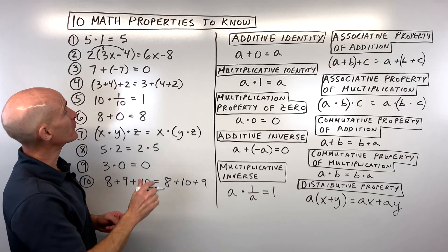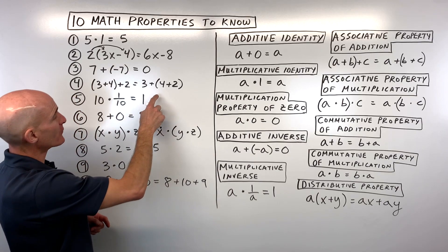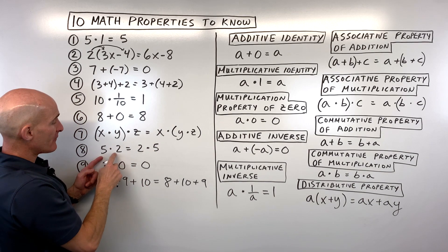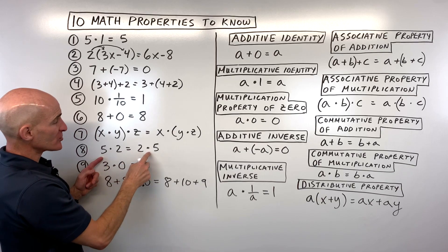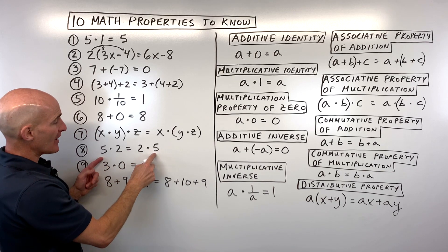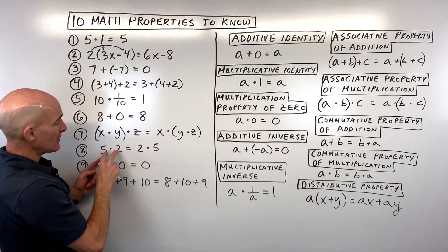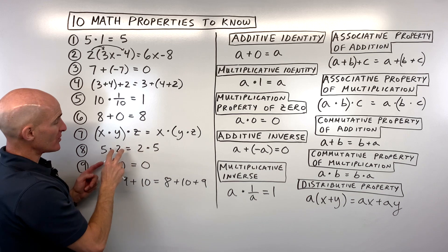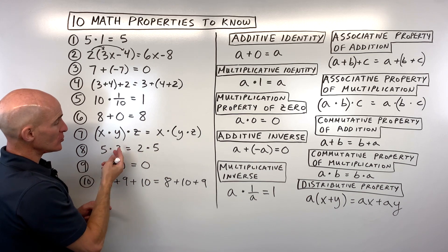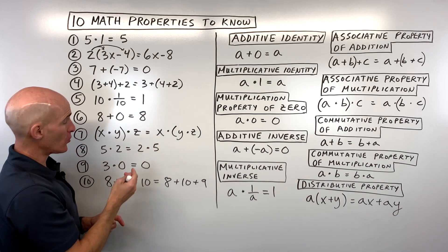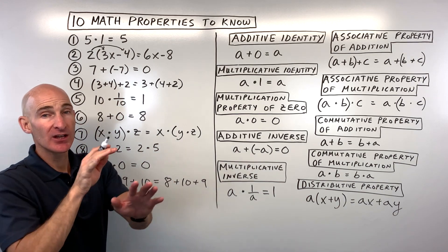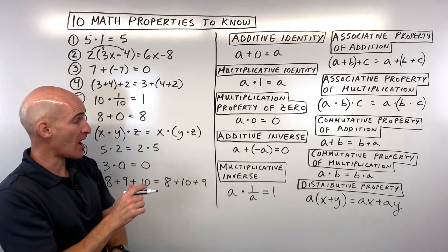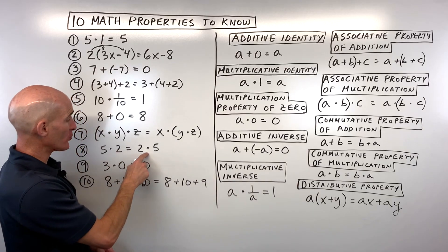Remember there's an associative property for addition and one for multiplication. For number eight, five times two equals two times five — both equal ten. We changed the order, so that's called the commutative property of multiplication.